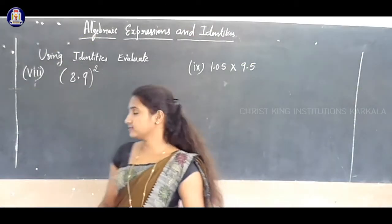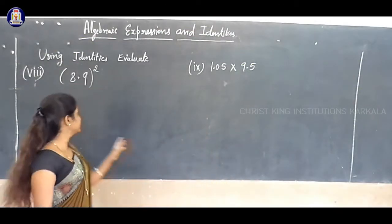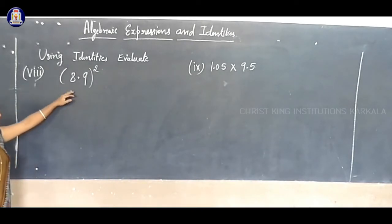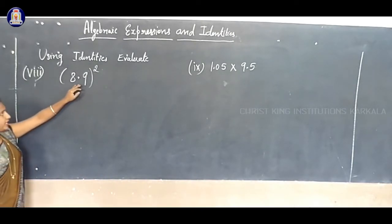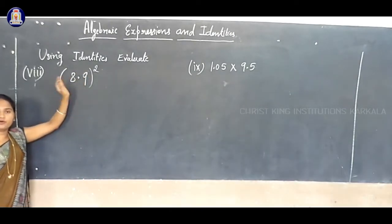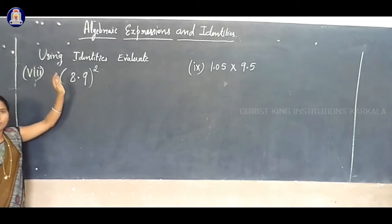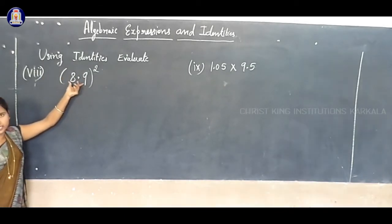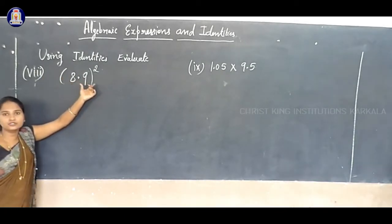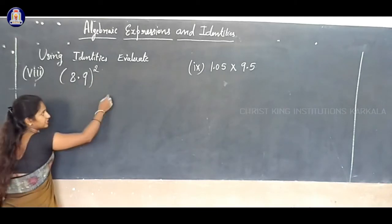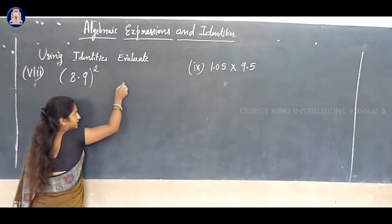Next question. See, I read this - evaluate 8.9 whole square. Okay, see the question. 8.9 is near to 9.